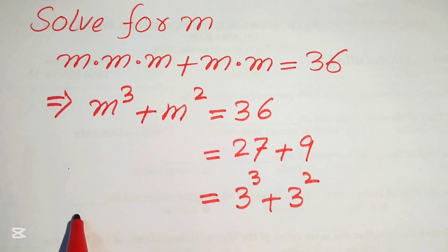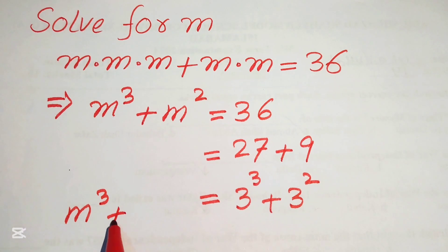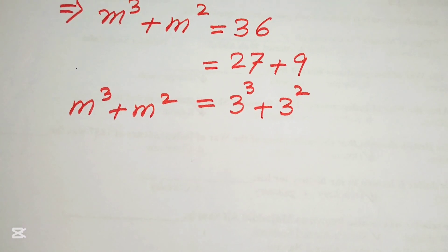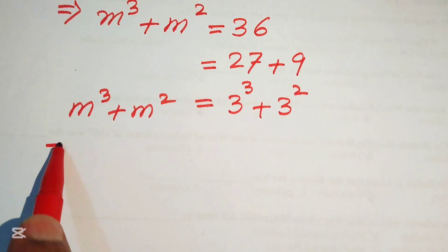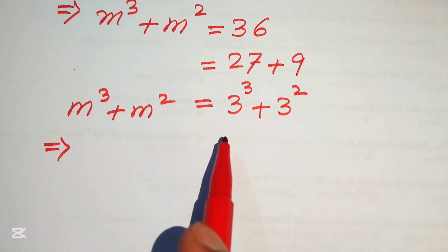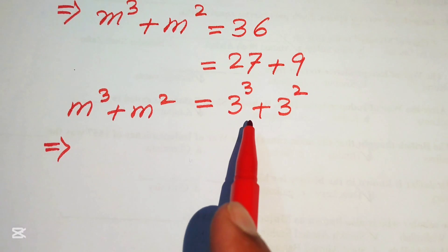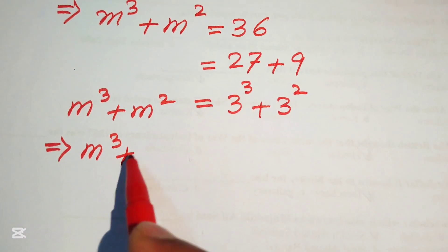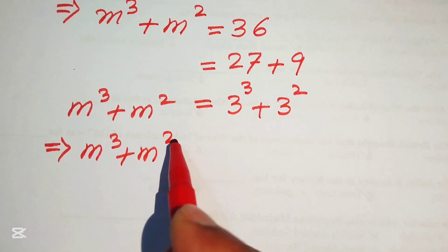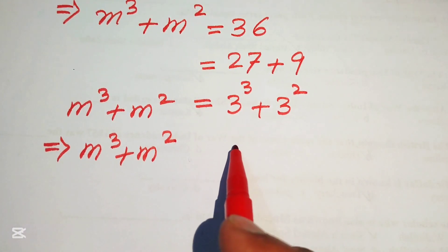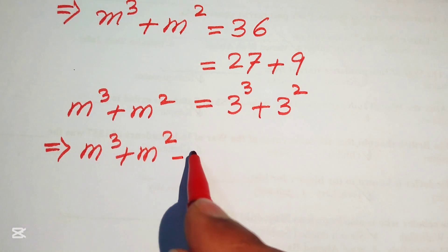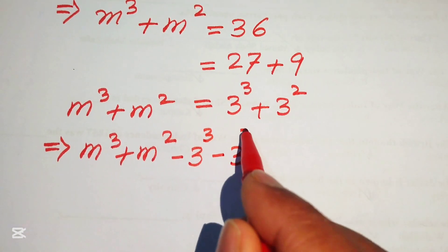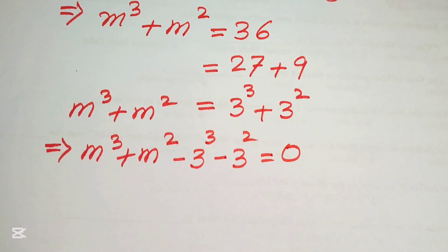In the left hand side we have m cubed plus m squared. Now we focus on both sides and remove all the terms from the right hand side to the left hand side. It will be written as m cubed plus m squared minus 3 cubed minus 3 squared equals to 0.